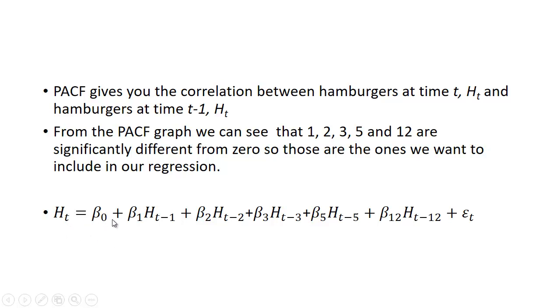So our regression model would look something like this: the amount of hamburger in time period t is going to be related to a constant here, the intercept term if you're looking at a graph, and then the sensitivity or the slope coefficient β_1 with respect to hamburgers lag 1 period, and then the slope coefficient or the relationship times the amount of hamburgers sold two periods ago, and likewise for three periods, five periods, and twelve periods.